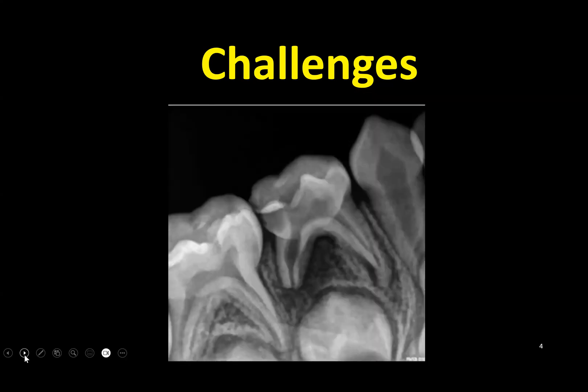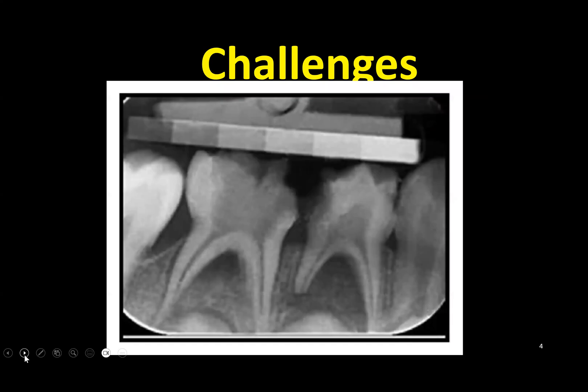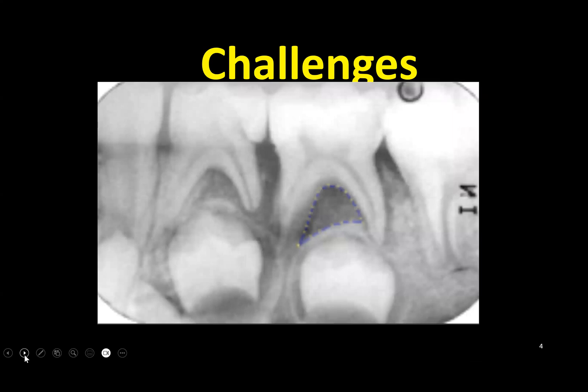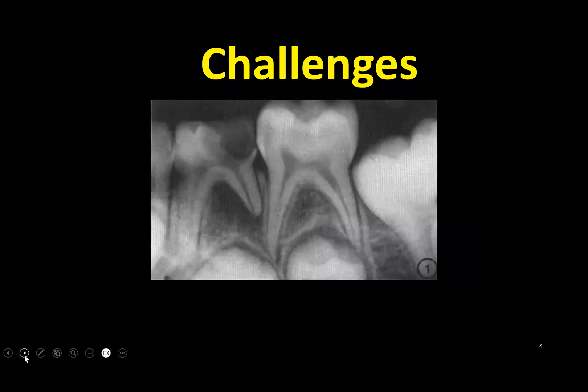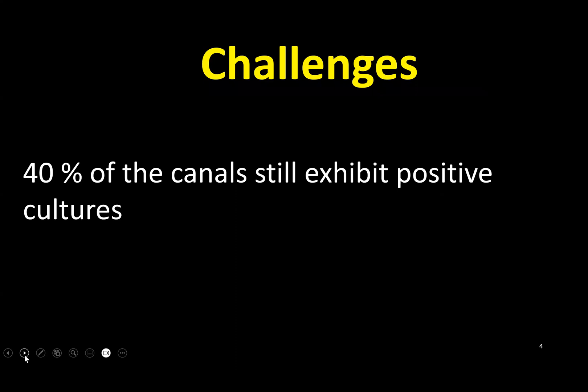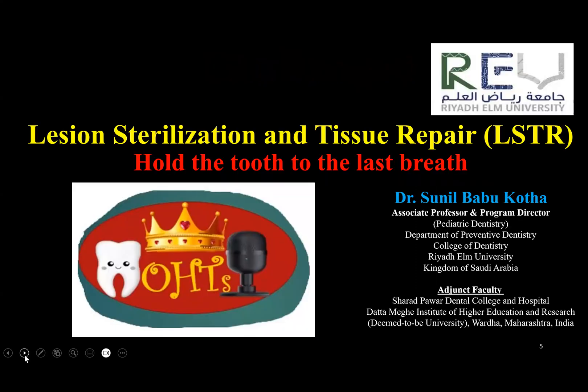There are conditions like these where there is complete resorption, and in this particular condition mobility of the teeth can also be present. Still, 40% of the canals exhibit positive cultures. So the question is how far we can do pulpectomy and save the tooth where the patient is not cooperative. I am here to present today the Lesion Sterilization and Tissue Repair — how to hold the tooth to the last breath.